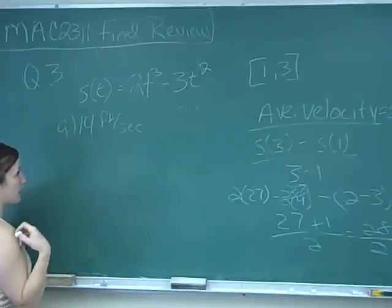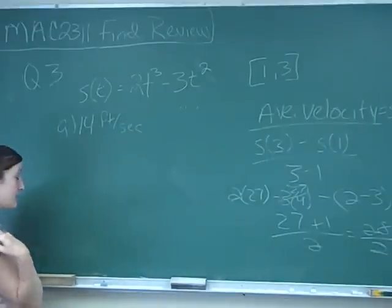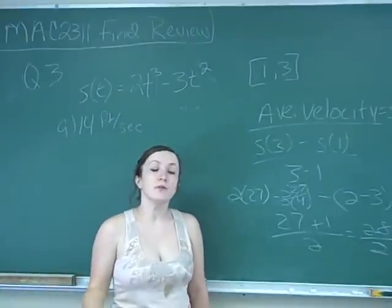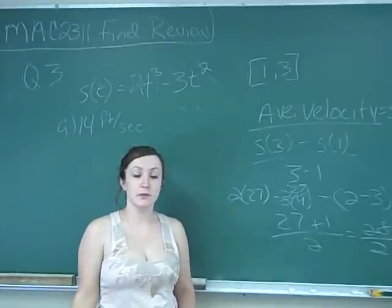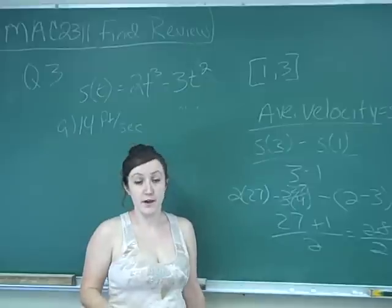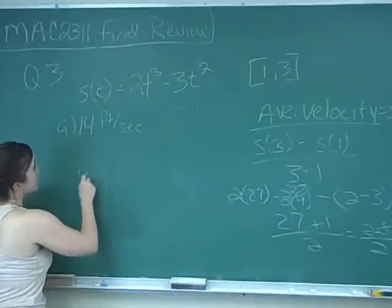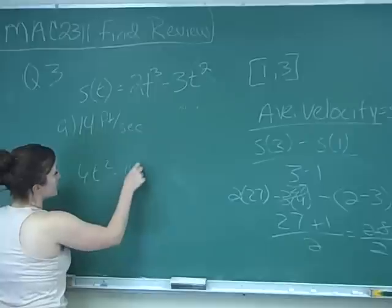And so the second part asks us to find the instantaneous velocity. And now, knowing all the knowledge that you know, the instantaneous velocity is just going to be where we take the derivative and plug in the value. So we're going to take the derivative of this, and that's going to give us 6t squared minus 6t.